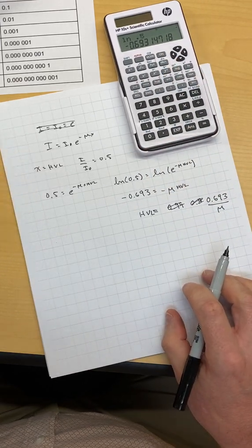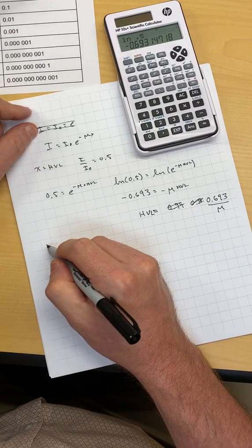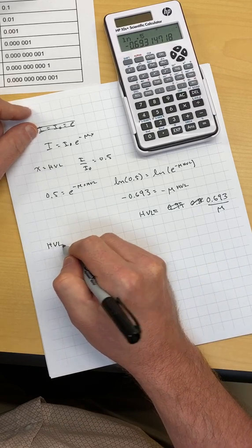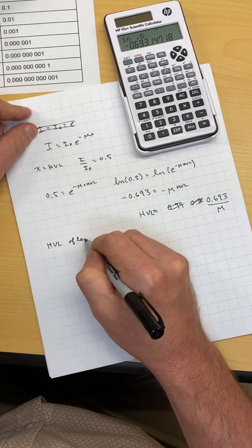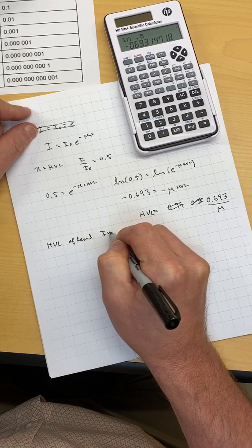And then I have this example, so we can figure out what is the HVL of lead, half value layer of lead, for iridium-192 source.